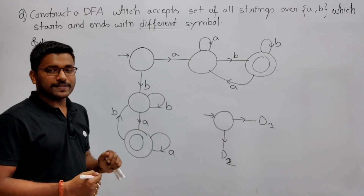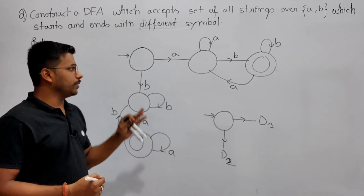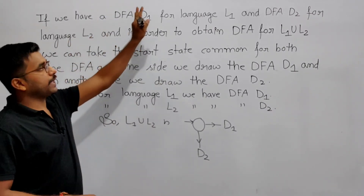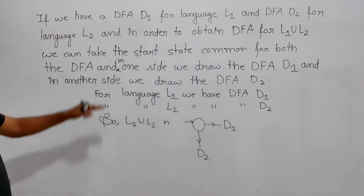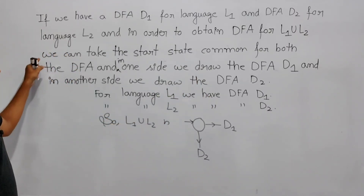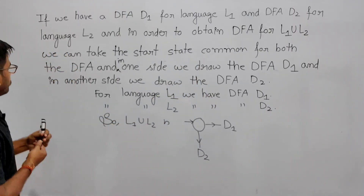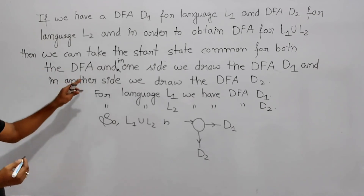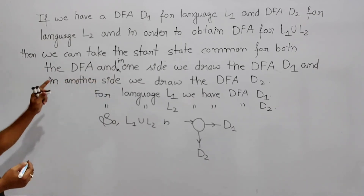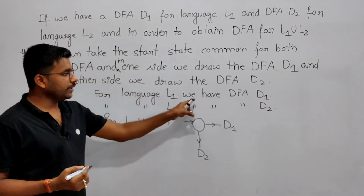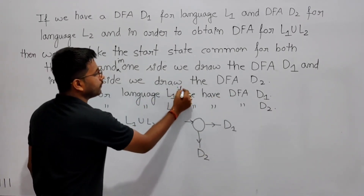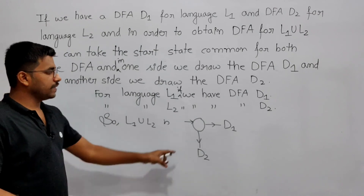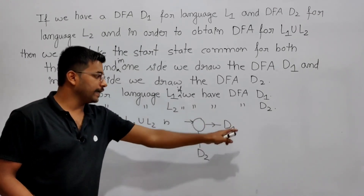In an exam I suggest you directly construct the DFA as it takes less time. Now I have written the notes for you: if we have DFA D1 for language L1, and DFA D2 for language L2, and we want to obtain a DFA for L1 union L2, then we take the start state as common for both DFAs — on one side we draw DFA D1 and on the other side we draw DFA D2, and that gives us the DFA for L1 union L2.